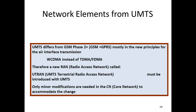If you observe your mobile phones, you will see different types of networks that you can choose. If you go to network settings and select automatic or manual, you can see options like TDMA, CDMA, WCDMA, and others. A new radio access network called UTRAN — UMTS Terrestrial Radio Access Network — was introduced with UMTS.